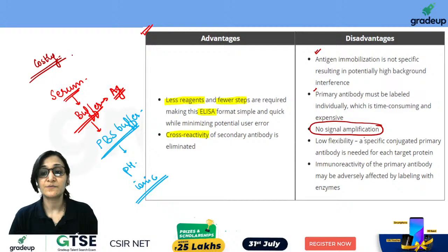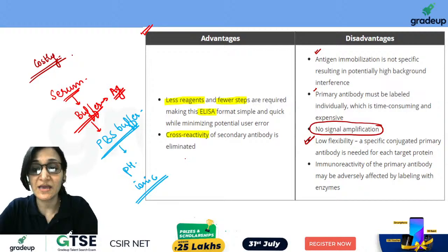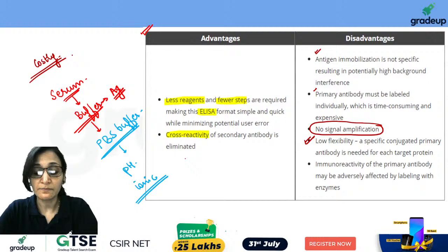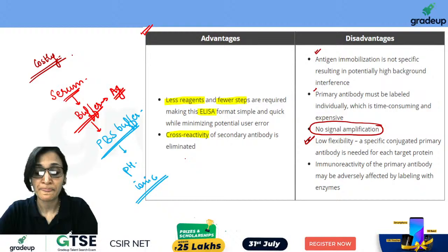There is low flexibility — a specific conjugated primary antibody is needed for each target. The immunoreactivity of the primary antibody may be adversely affected by labeling with the enzyme. When something unnatural is added to a biomolecule, its structure may change. If structural change occurs, the antibody may not bind the antigen with the same efficiency as inside the body.